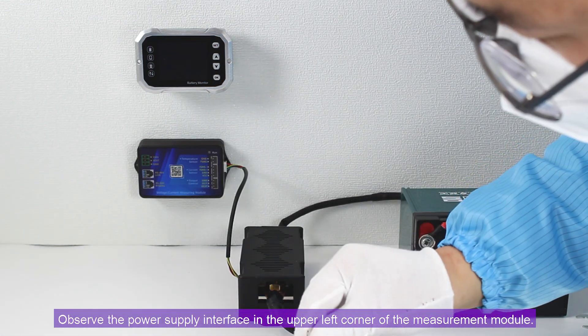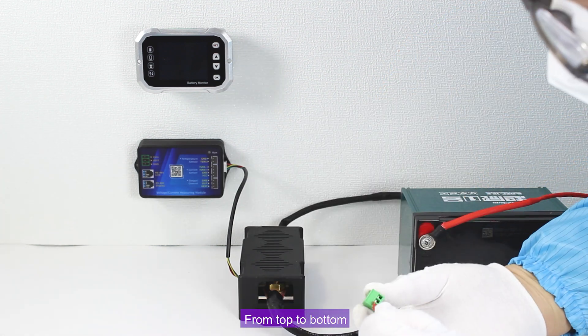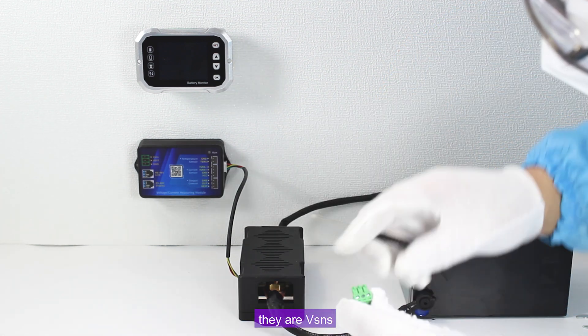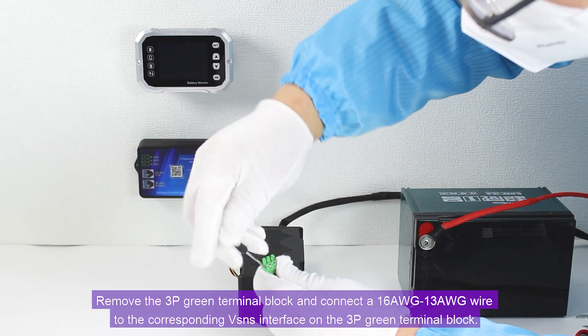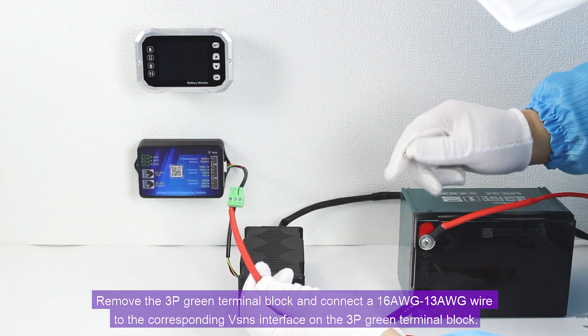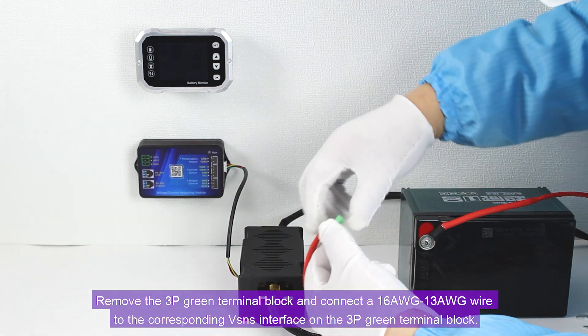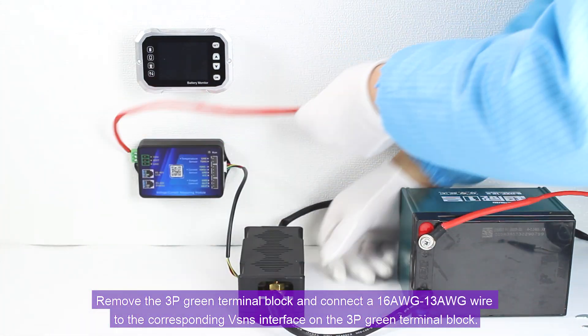Observe the power supply interface in the upper left corner of the measurement module. From top to bottom, they are VSNS, VEXT, and GND. Remove the 3P green terminal block and connect a 16AWG to 13AWG wire to the corresponding VSNS interface on the 3P green terminal block.